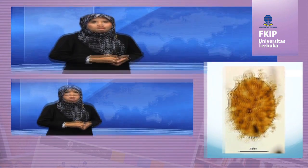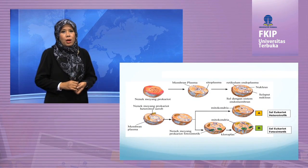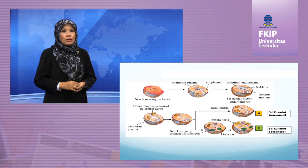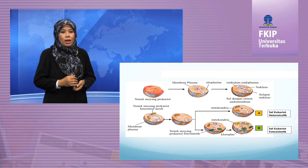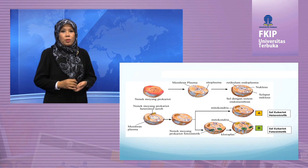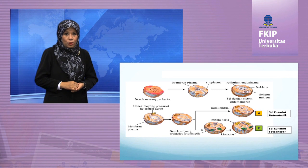Gambar berikut menjelaskan model tentang asal-usul eukaryota. Pada gambar ini dijelaskan bahwa simbiosis sel-sel prokaryota menimbulkan keanekaragaman sel. Sel yang hanya memiliki mitokondria akan berkembang menjadi sel hewan, dan sel yang memiliki kloroplas dan mitokondria akan berkembang menjadi sel tumbuhan.